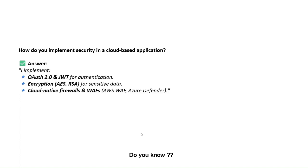How do we implement security in cloud-based applications? We use authentication with JWT. We use encryption keys — public key and private key concepts. We also use cloud-native firewalls and WAF; for example, Azure Defender in Azure and AWS WAF in AWS.